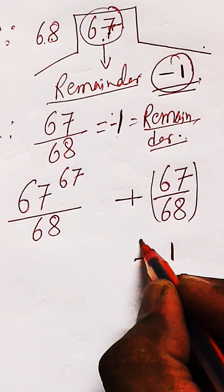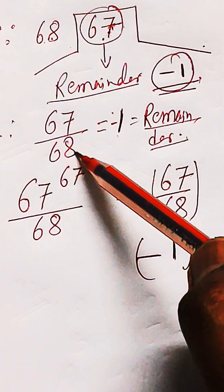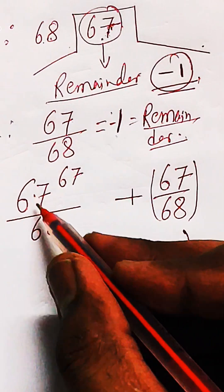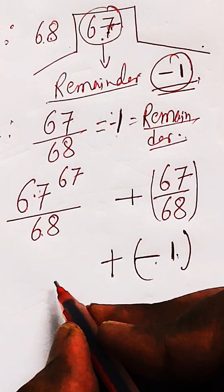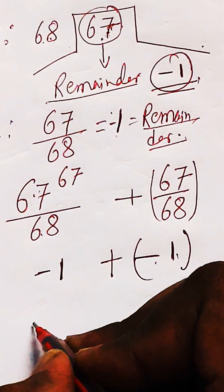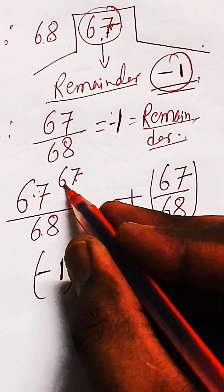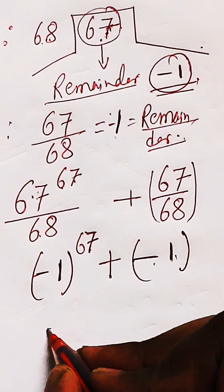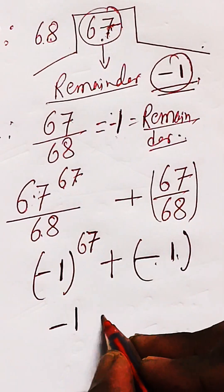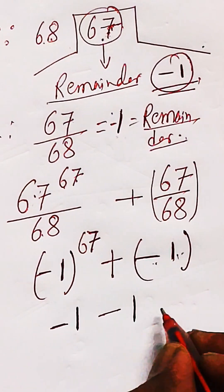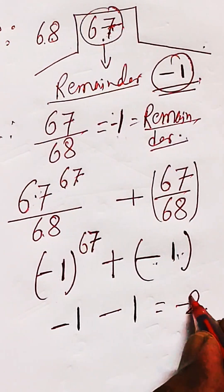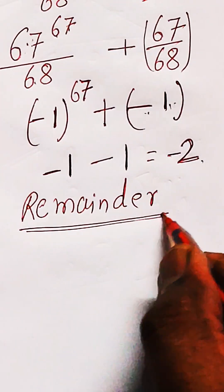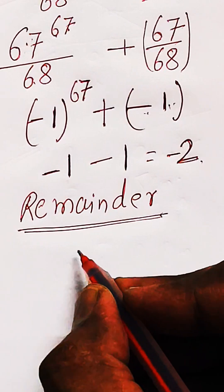The second term gives remainder minus 1, because 67 divided by 68 gives minus 1. For the first term, 67 is an odd power, so minus 1 raised to an odd multiple gives minus 1. Adding both terms: minus 1 plus minus 1 gives minus 2.